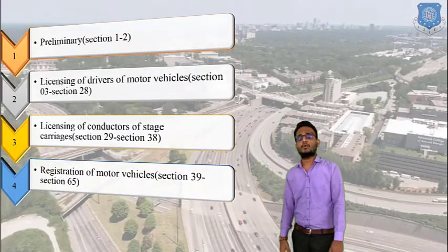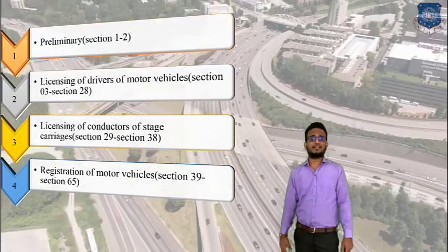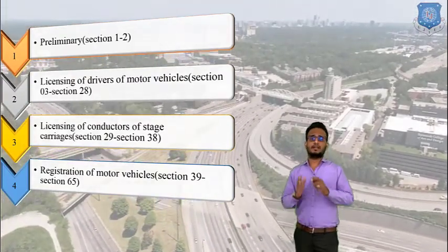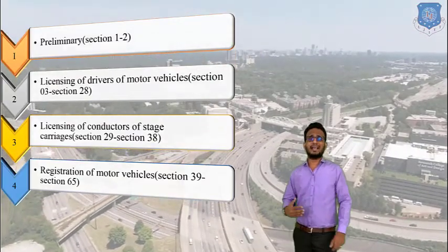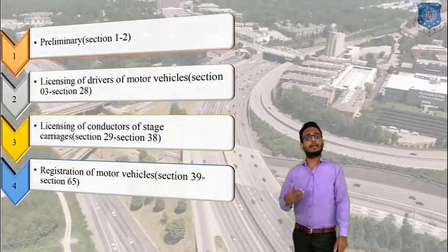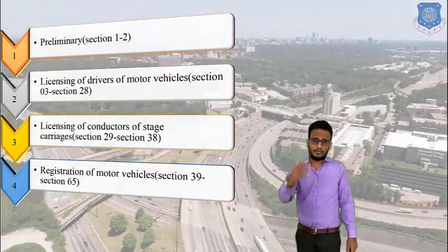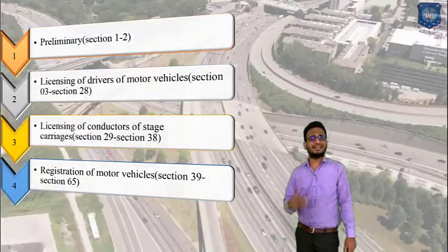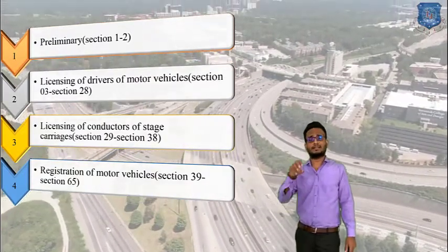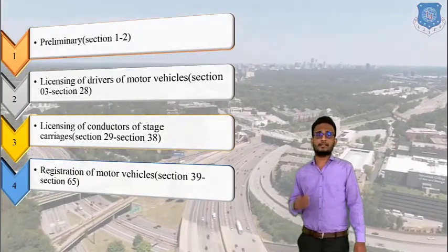Chapter number 4 is a most important chapter of the Motor Vehicle Act — registration of motor vehicles — and contains section 39 to section 65. This chapter covers registration for two-wheelers with gear, two-wheelers without gear, three-wheelers, motor cars, heavy duty motor cars, heavy duty trucks, light trucks, and various other categories of motor vehicles.